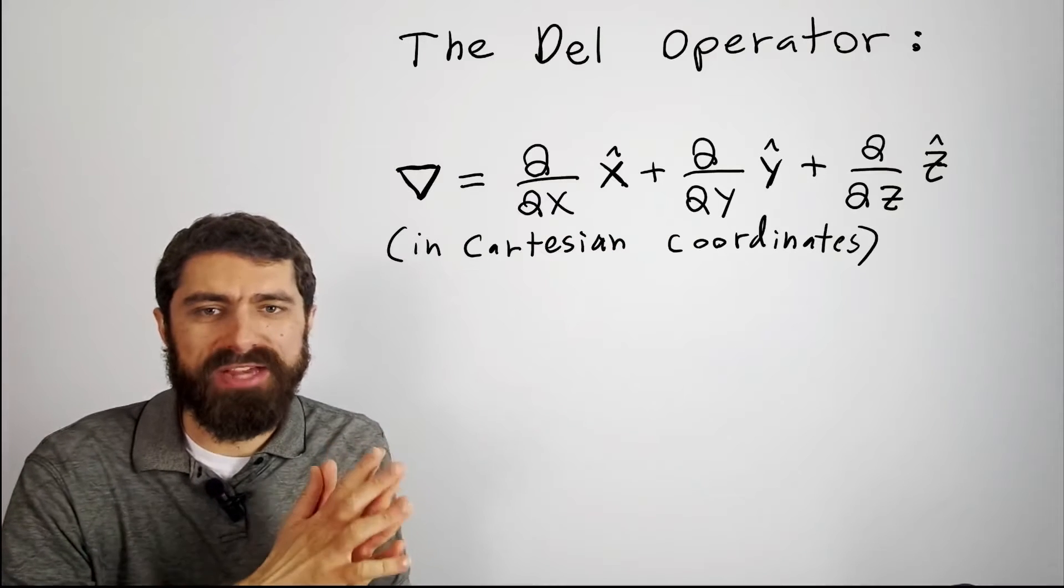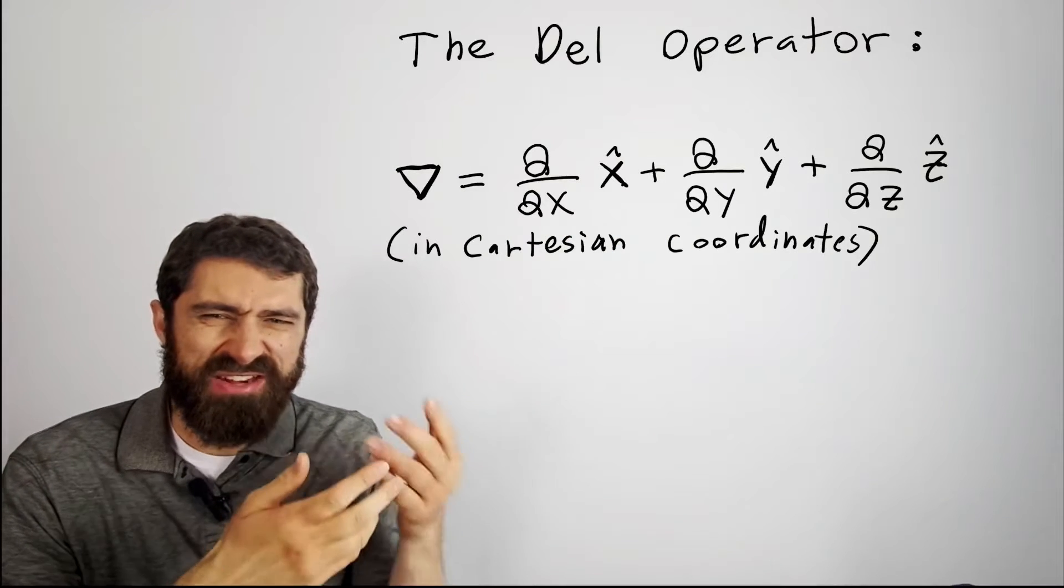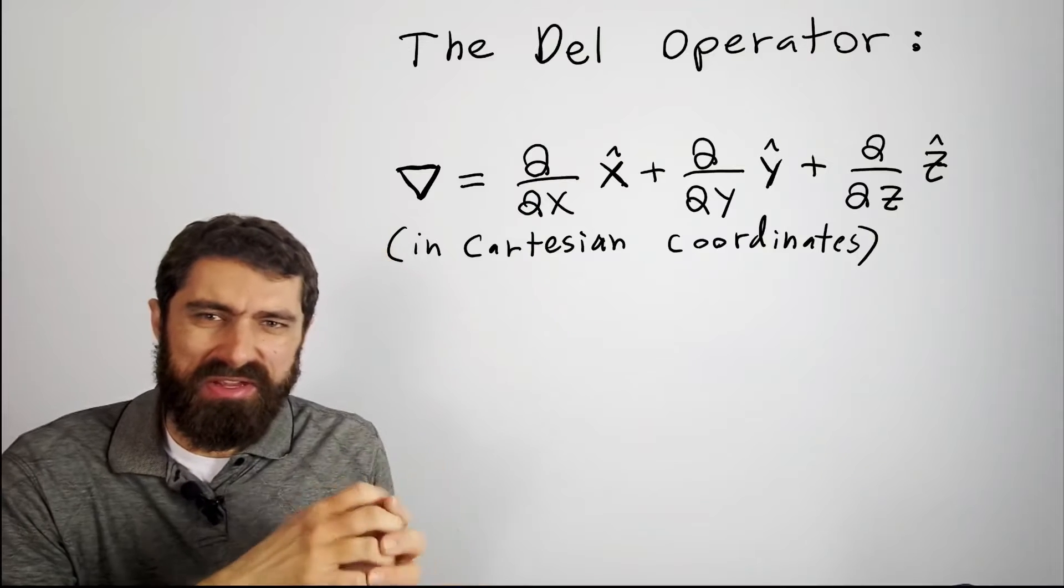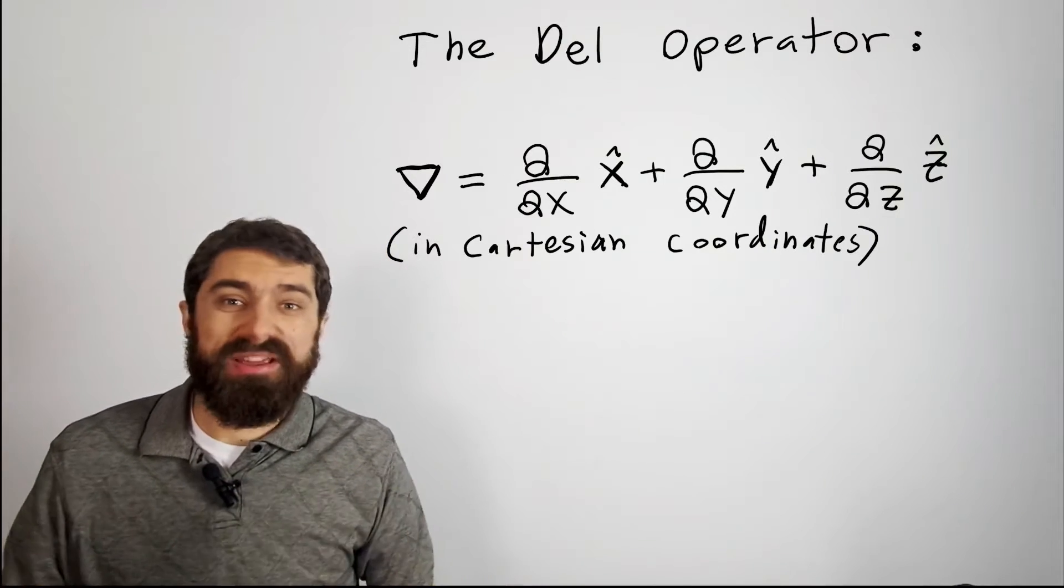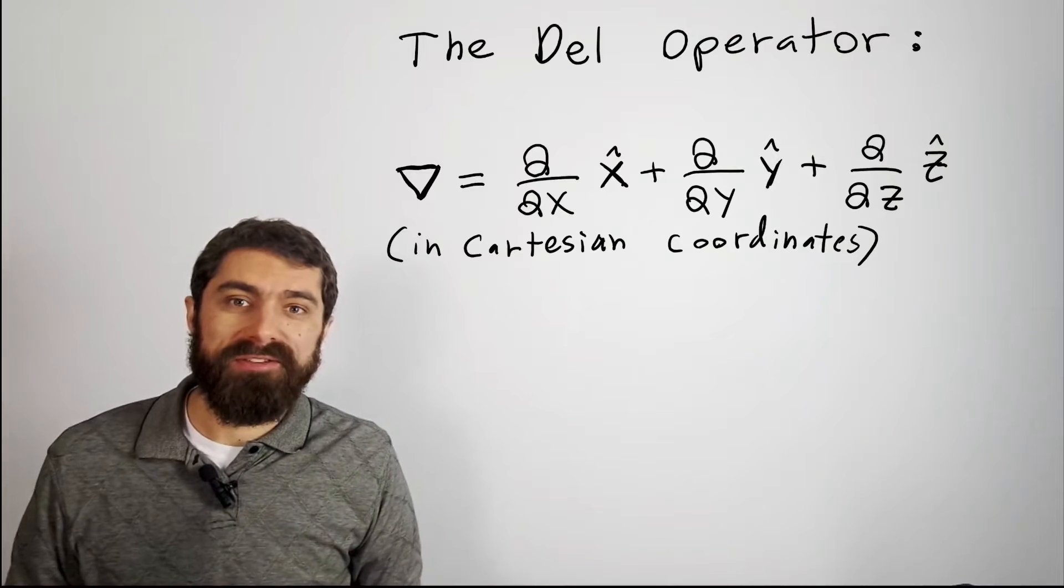Okay, so you remember when we looked at Maxwell's equations, we saw that mysterious little upside down triangle thing. You're probably wondering what on earth does that mean? And that's what we're going to talk about today.